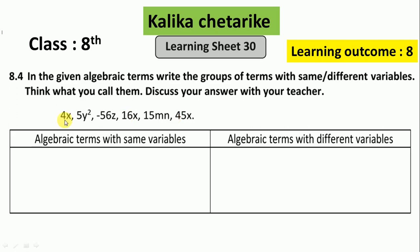Here some algebraic terms are given: 4x, 5y², -56z, 16x, 15mn, 45x. We have to write the terms which have the same variable. Here is 4x and the same variable is here, 16x and 45x. We write here the same variable and the other terms we write in different variables.